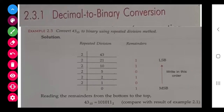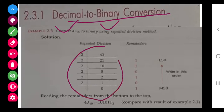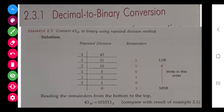First: decimal to binary. Decimal has base 10 and binary has base 2, so for decimal to binary we divide by 2. For decimal to octal we divide by 8, and for decimal to hexadecimal we divide by 16. We use the remainder method for all these conversions.